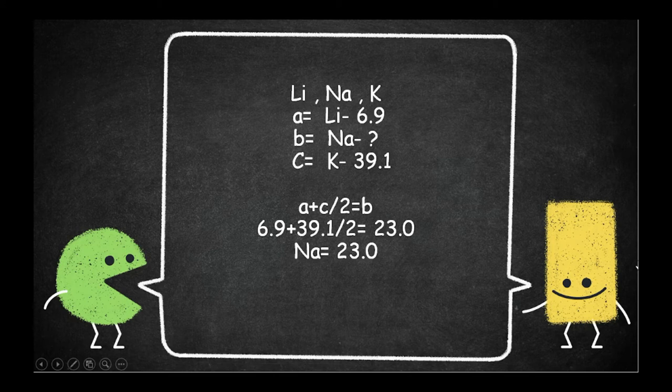So a + c, that's 6.9 + 39.1 divided by 2 equals 23.0. So the atomic mass of sodium is 23.0. It is approximately equal to the atomic mass that we know right now in 2020, in the present.